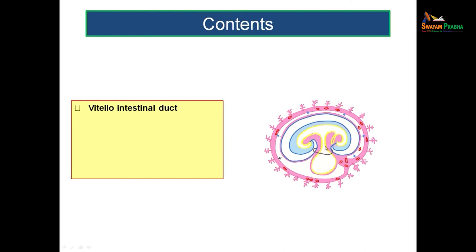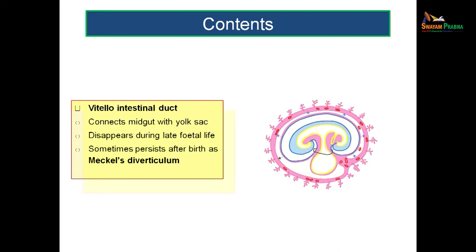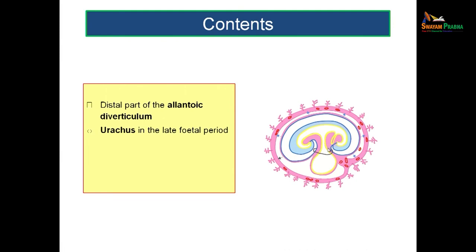The vitellointestinal duct connects the midgut with the yolk sac. During the late fetal period, once the yolk sac is used up, this duct degenerates. Sometimes it persists after birth, causing Meckel's diverticulum. The allantoic diverticulum — a finger-like projection at the caudal end of the embryonic disc — vascularizes the umbilical cord, as the umbilical vessels are derived from it. In the late fetal period, its remnant is the urachus, which after birth forms the median umbilical ligament, extending from the apex of the urinary bladder to the anterior abdominal wall.